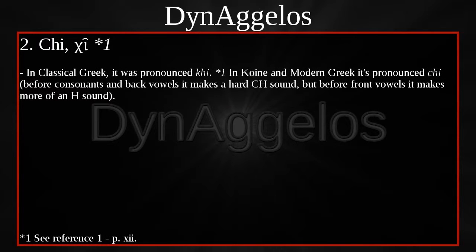CHI — in classical Greek it was pronounced KEY. In Koine and modern Greek it's pronounced KEY. Before consonants and back vowels it makes a hard CH sound, but before front vowels it makes more of an H sound. In the word 'he,' the letter makes the H sound. For example, in 'choros,' because omicron is a back vowel, it makes the CH sound. I've noticed that modern Greeks don't always enunciate the CH sound as much, and some don't distinguish between the H and hard CH sounds.